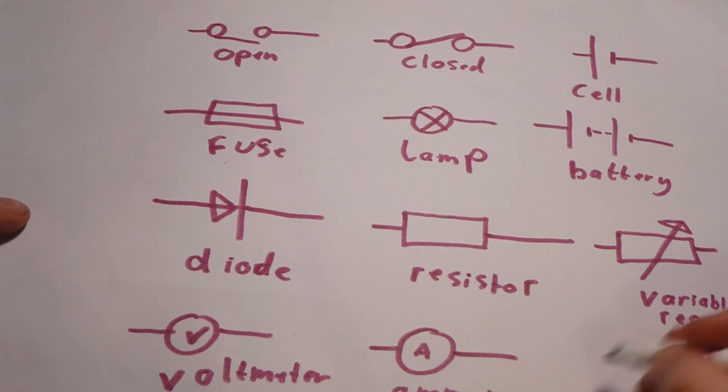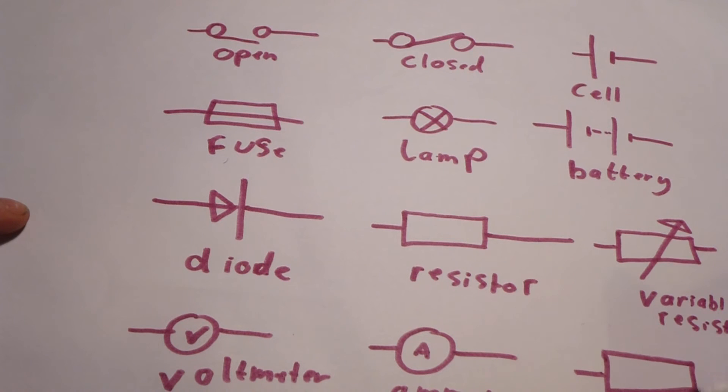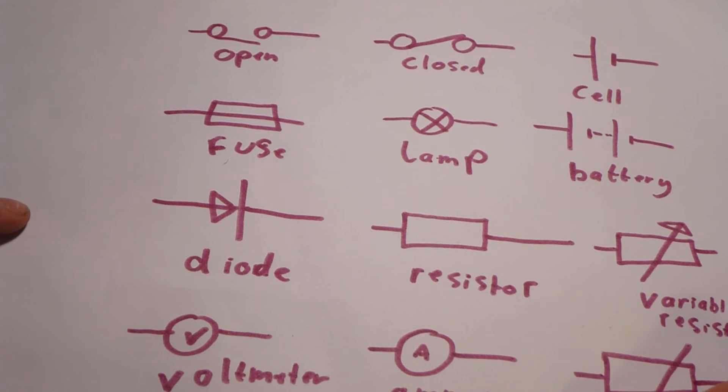After that, we have a thermistor, which is the same as a resistor, but it changes the resistance as temperature changes.